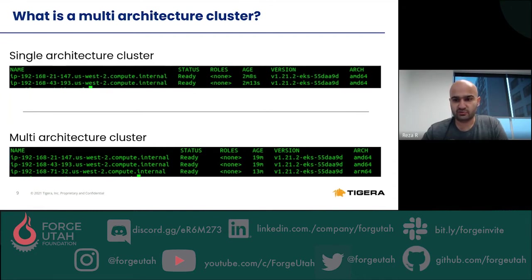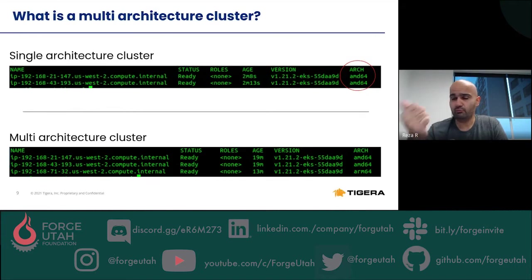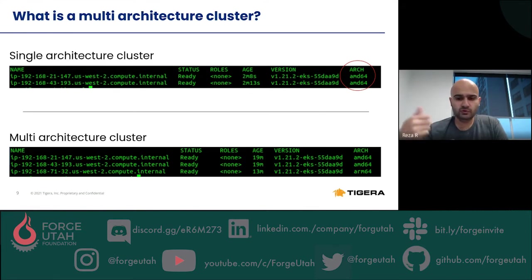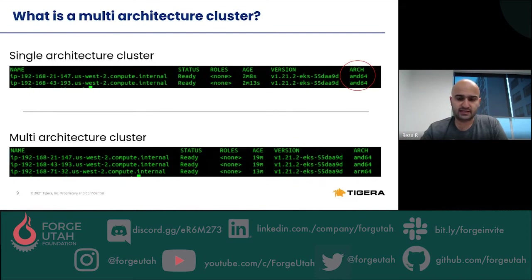Now that we know the benefits — and hopefully saving money is intriguing — let's talk about what I mean by a multi-architectural cluster. When participating nodes in a cluster have different CPU architectures, we have a multi-architectural cluster. Usually when we create a Kubernetes cluster we use an Intel or AMD CPU based on x86 or AMD64. In a multi-architectural cluster, we use nodes with different processors, allowing us to divide workloads based on their processing needs. An ARM64 node participates alongside the AMD64 nodes.